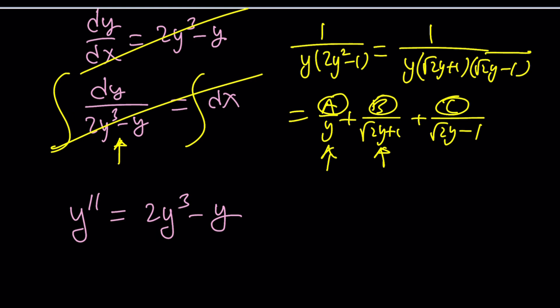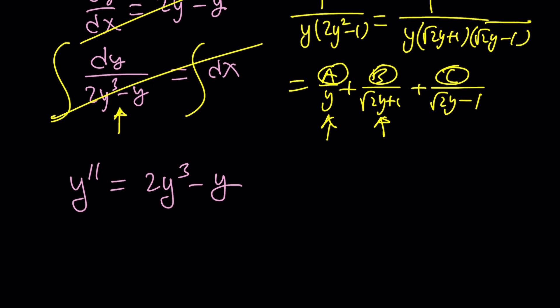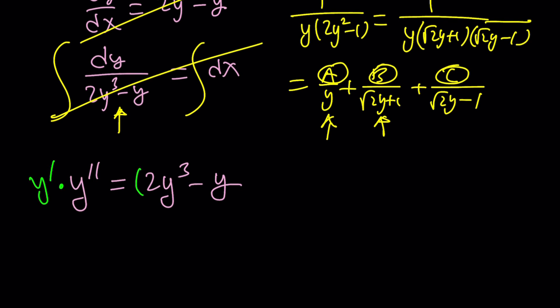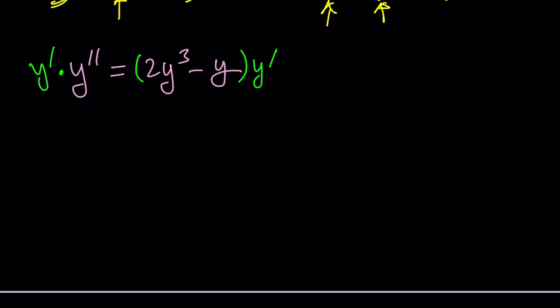We're going to multiply both sides by y prime — the hocus pocus magic step. This does two good things: on the right-hand side it gives us the derivative of something multiplied by y prime, which we can integrate using the chain rule. On the left, we have a nice product that can be written as the derivative of something.